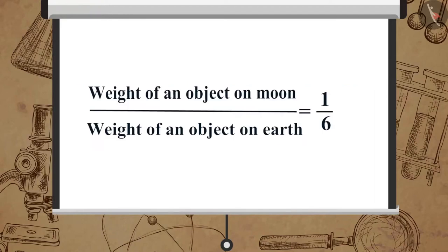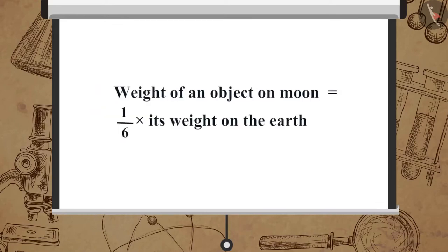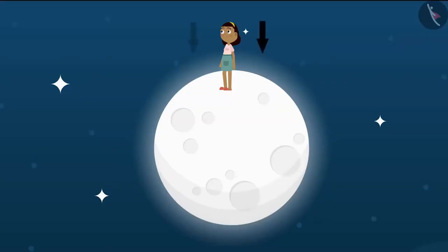Therefore, the weight of an object on the Moon upon its weight on the Earth is equal to 1 upon 6. So the weight of an object on the Moon is one-sixth multiplied by its weight on the Earth. What will be your weight on the Moon?